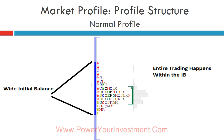Looking at an example — this appears to be Nifty — the initial balance is 80 points and most of the rotation happens within it. As a trader, it's very difficult to trade this market. The first clue in identifying the structure is to look at the initial balance: if it is extremely wide, it's better to avoid.